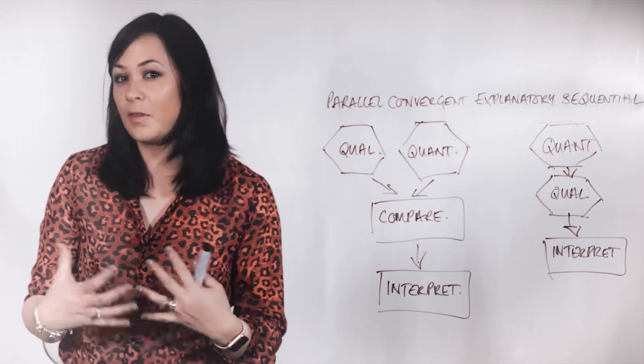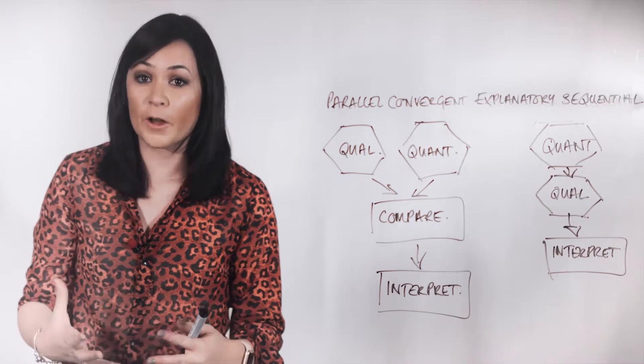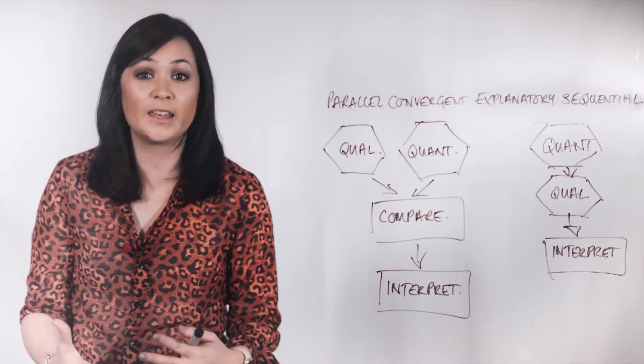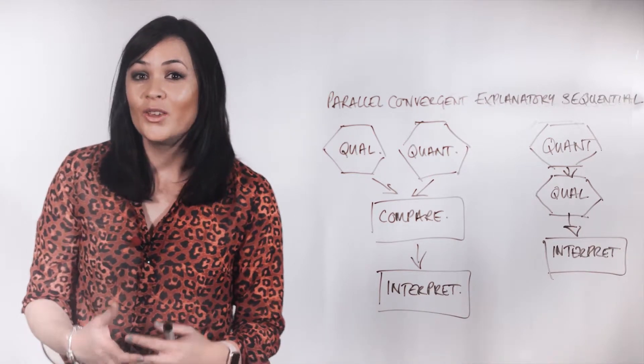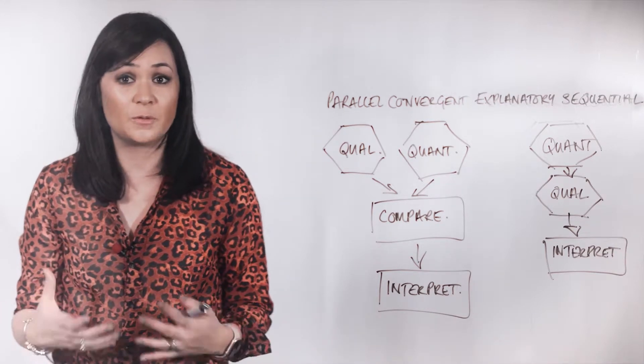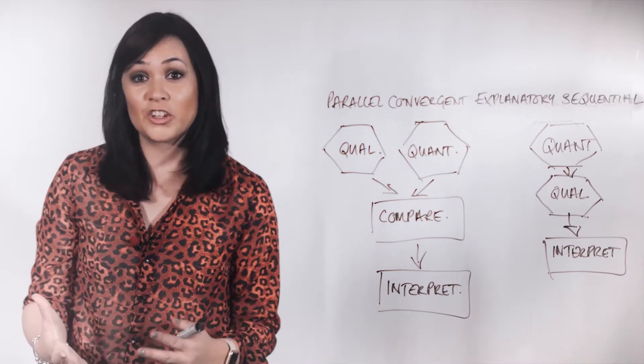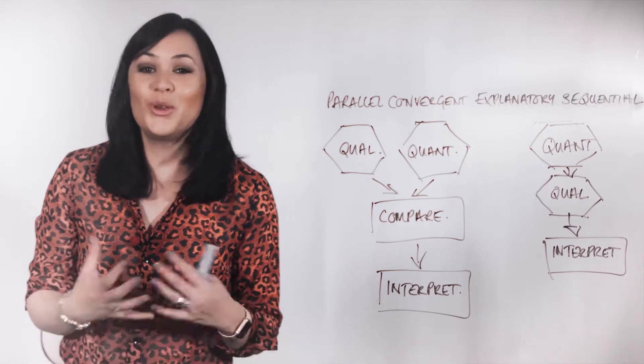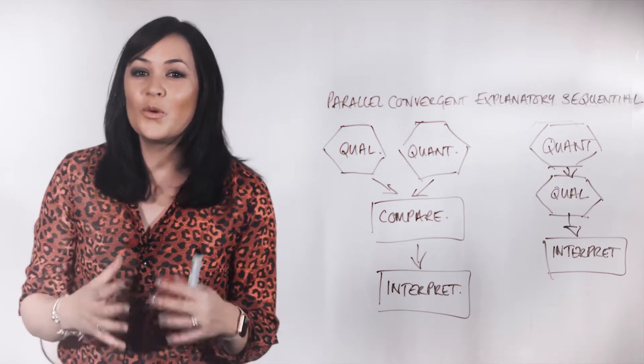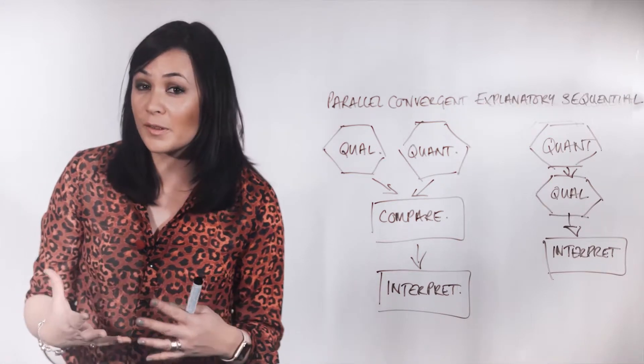Consider the example of the therapeutic intervention for the treatment of PTSD symptoms in first responders. Perhaps you want to examine the treatment outcomes of a particular therapeutic modality using a PTSD symptom survey, and also through interviews with first responders experiencing these symptoms. In a parallel convergent mixed methods study, you would obtain permission for the use of a survey instrument, and also develop an interview guide about the treatment experiences at the outset of your study.